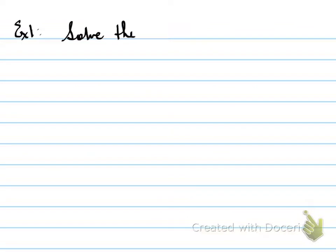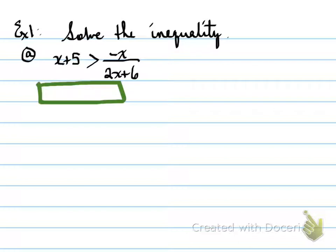Let's look at the first example. Solve the inequality. Here's our inequality, we have x plus 5 is greater than negative x over 2x plus 6. So we look at this question. What's the first thing we see? We see this symbol. But if we were to treat this symbol like an equal sign, we see that one side is a whole, kind of like a whole number, and the other side is like a fraction.